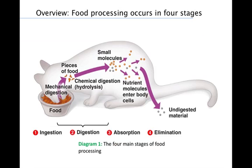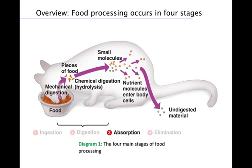Diagram 1 illustrates an overview of the four main stages of food processing. Stage 1, ingestion, is basically the active eating. Stage 2, digestion, is the breaking down of food into molecules small enough for the body to absorb. Stage 3, absorption: the cells lining the digestive tract absorb the broken-down polymers as explained previously.